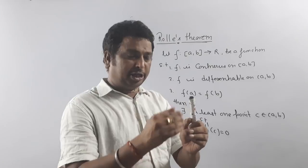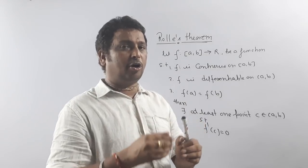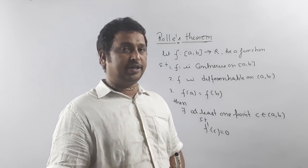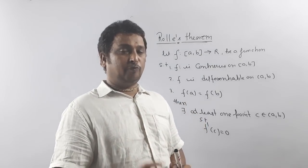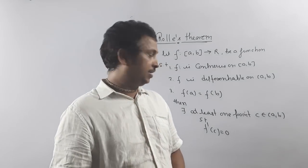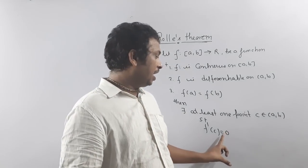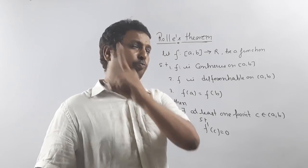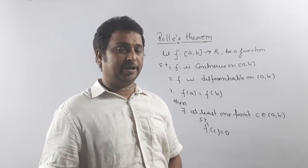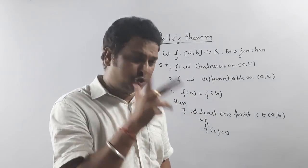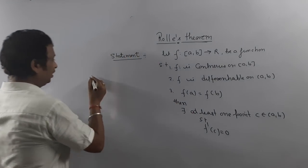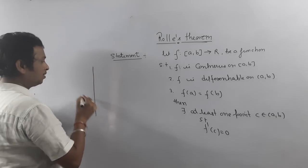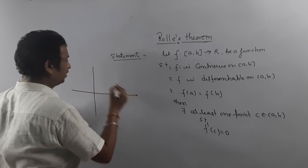This means the derivative of the function at that point c, which lies between a and b, is always equal to zero — at least one such point must exist. Now let's understand its geometrical meaning so you can understand easily.